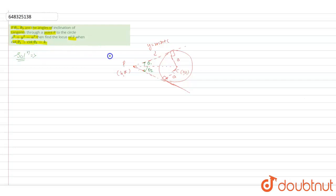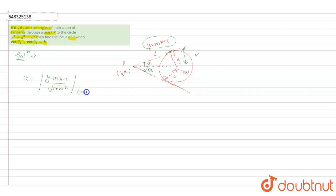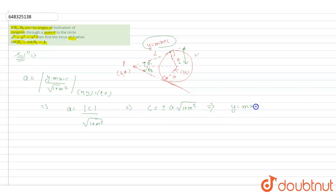Since the given line is tangent to the circle, the perpendicular distance between the center and the point of contact should be equal to the radius a. So the perpendicular distance equals the radius: a = |c| / √(1 + m²). From here, c = ± a√(1 + m²). So the equation of the tangent is y = mx ± a√(1 + m²).